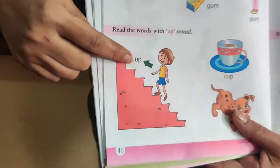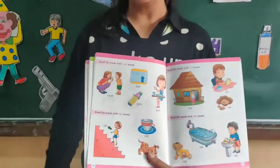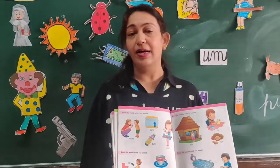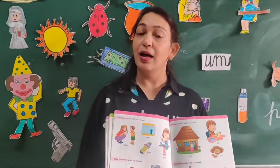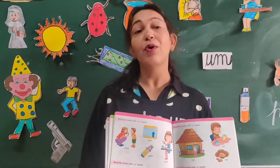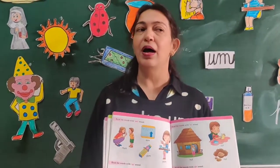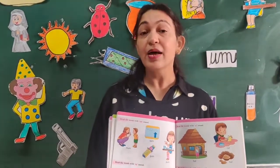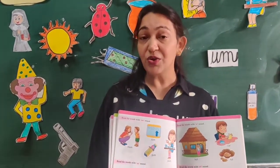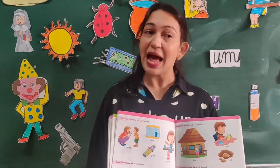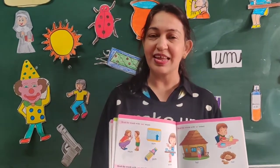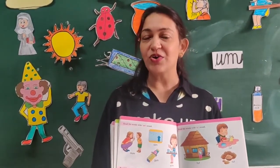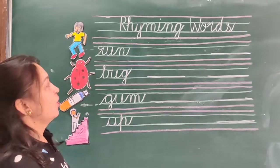So ab hum ne four sounds ki hai: A, na, an; A, ga, ag; A, ma, am; and A, pa, ap. Ab hum kya karenge — apni English ki notebook mein rhyming words karenge. So let's take out your orange notebook.